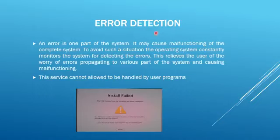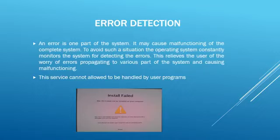Error detection is another important function of the operating system. An error in one part of the system may cause malfunctioning of the complete system. The operating system continuously monitors the production of dumps, traces, and error messages to debug and detect errors. For example, if the hard disk is not working properly and you try to install any software, an error message is generated by the operating system. This is done automatically by the operating system.